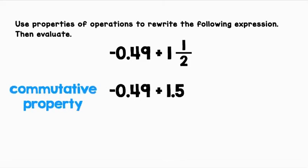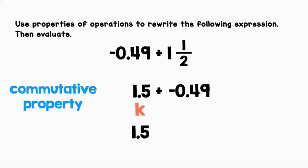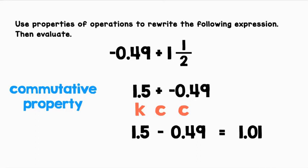Next, let's use the commutative property to flip the numbers. Now we have 1.5 plus negative 0.49. Lastly, let's use the additive inverse. Let's keep 1.5, change addition to subtraction, and change negative 0.49 to positive 0.49. Now we can easily solve: 1.5 minus 0.49 equals 1.01.